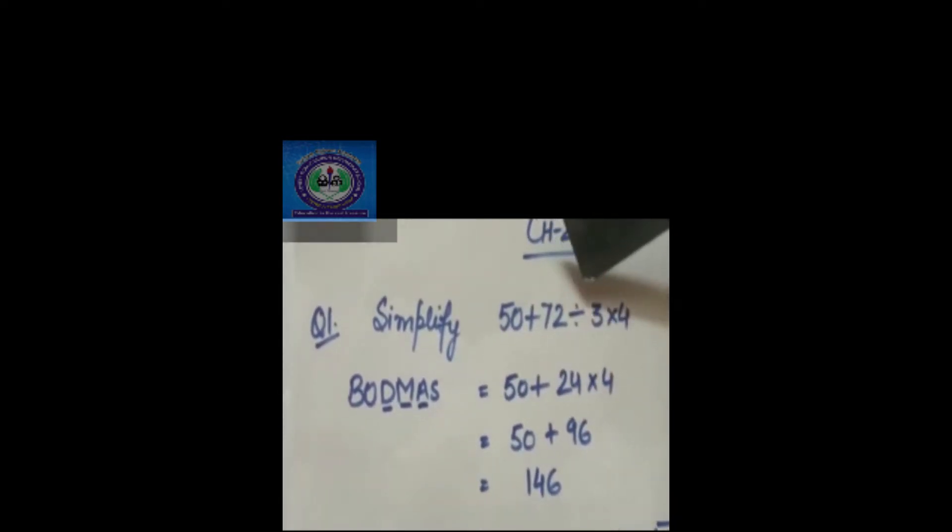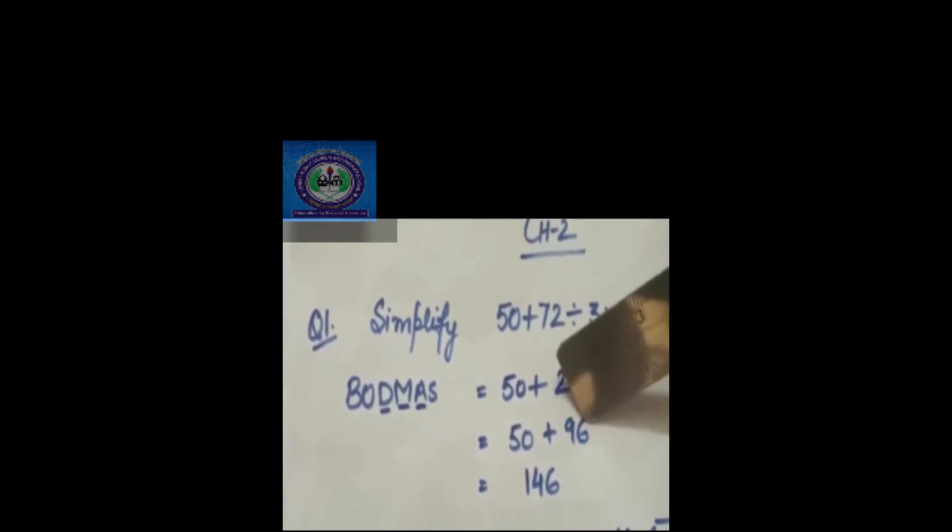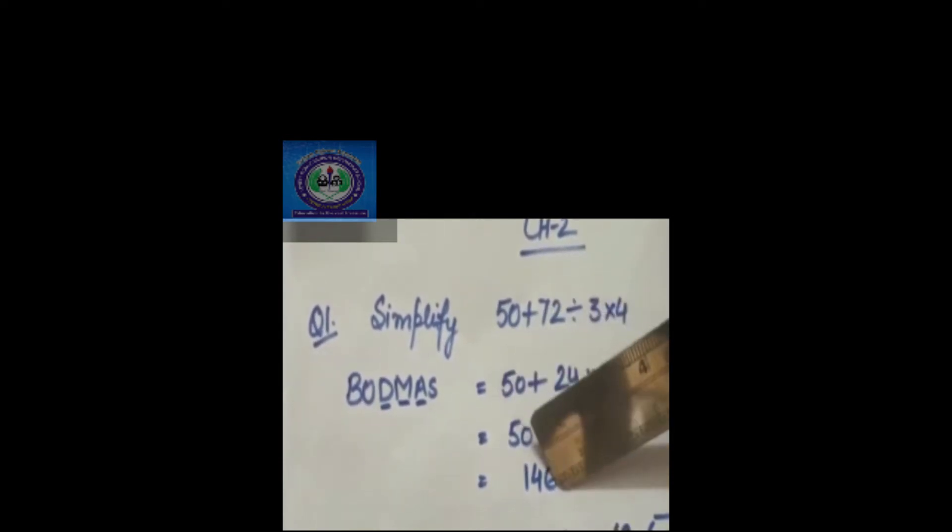So 72 divided by 3 will be 24, and then we will multiply this number 24 multiply 4, that is 96, and after that we will add this number with 50. We will get the answer 146.